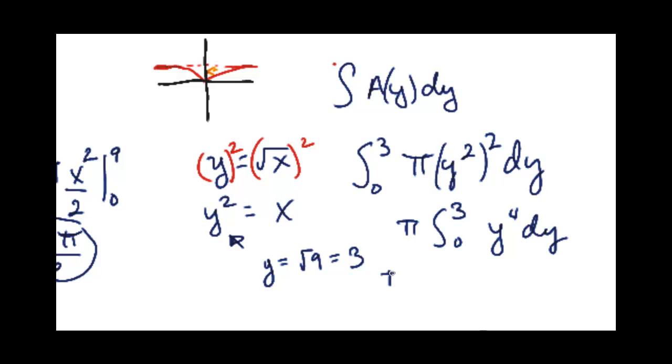So now when we integrate, pull out the pi, y to the fourth dy, and then we get pi y to the fifth over 5, evaluated between 3 and 0. Sorry, let me do it properly.